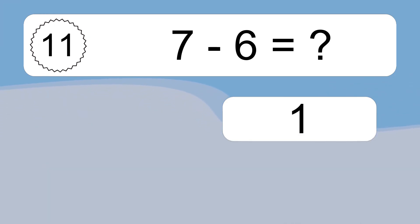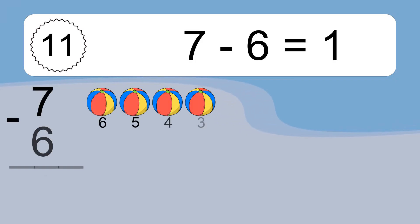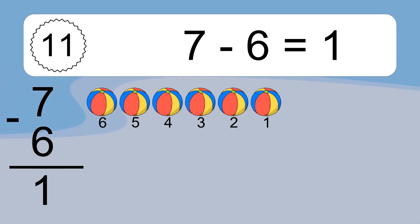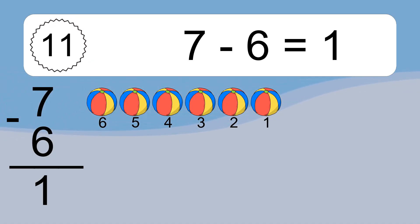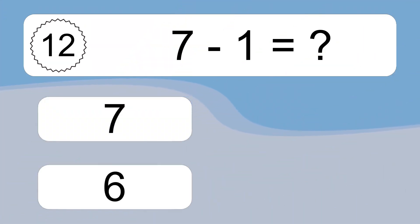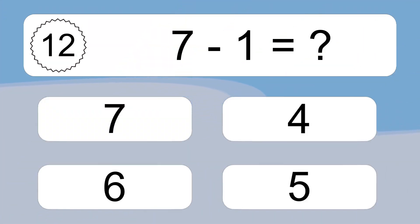7 minus 6 equals 1. Let's count it. 6, 5, 4, 3, 2, 1. 7 minus 1 equals what?